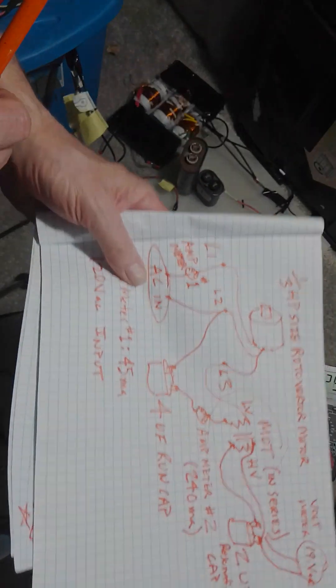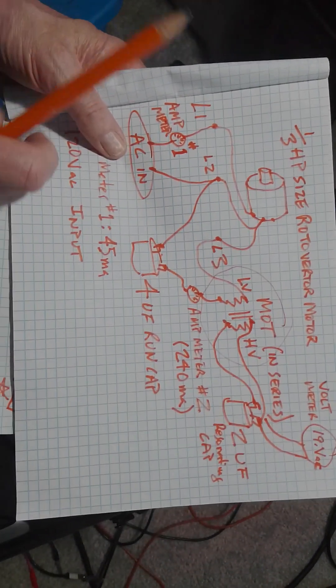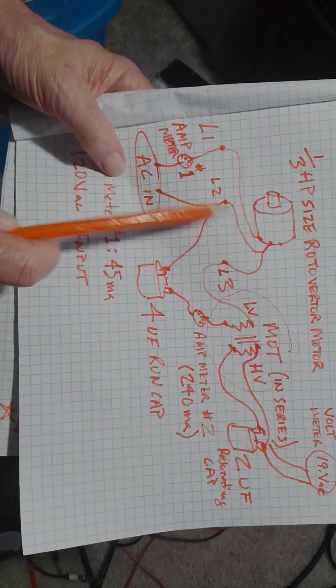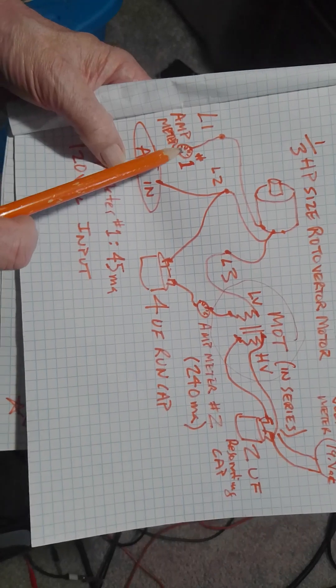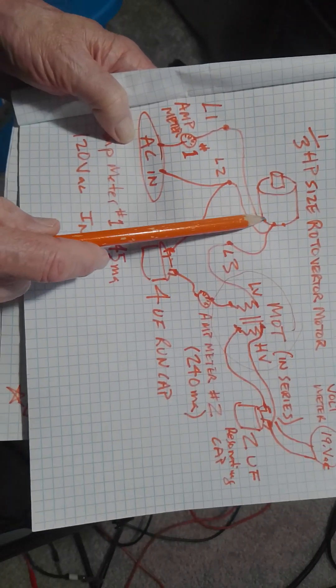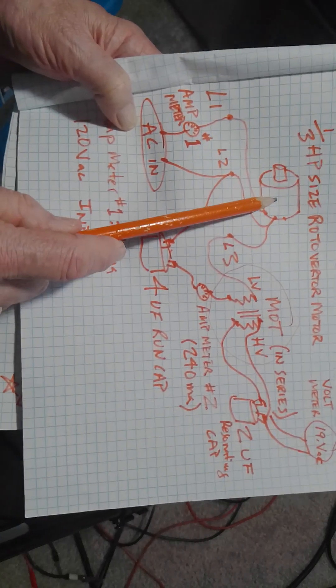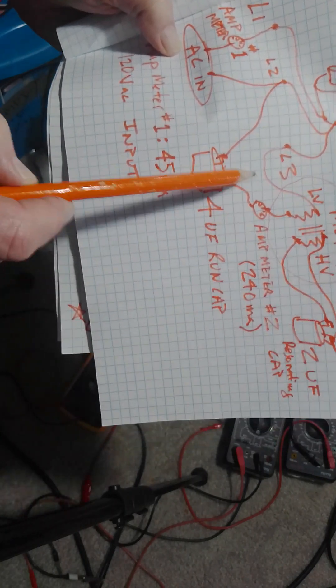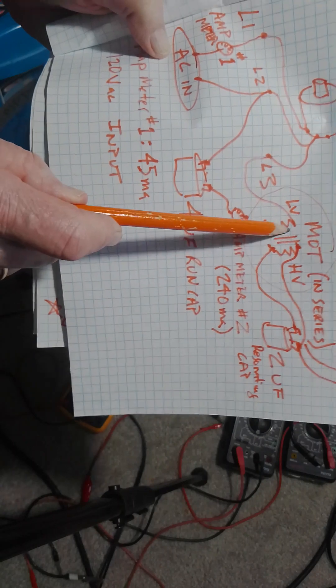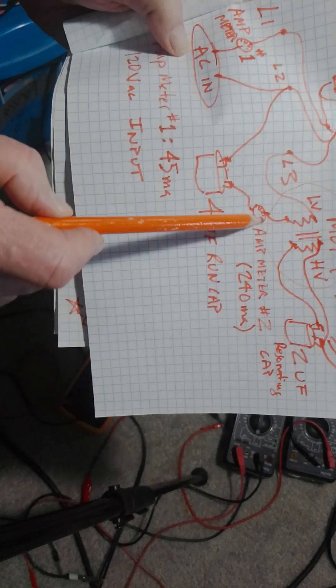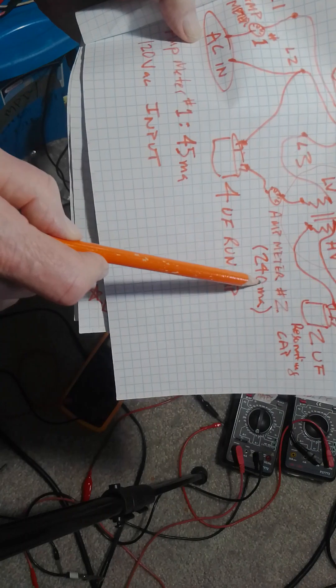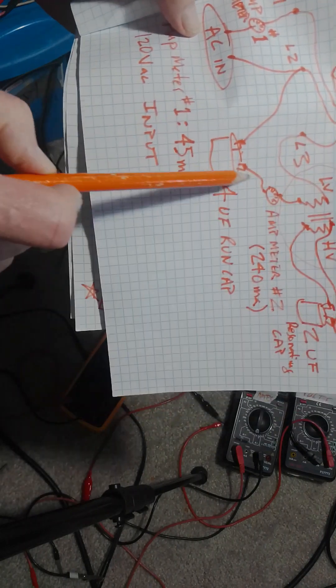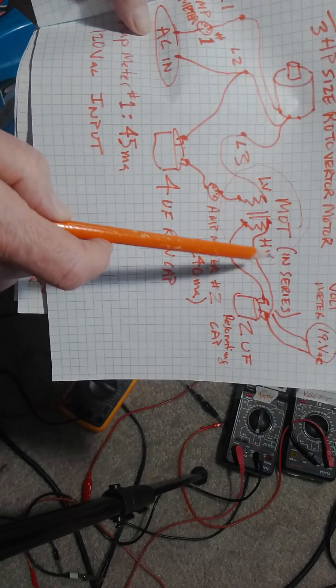And I'll show you the circuit again. Here's what I'm measuring input - the 45 milliamps to the motor. L1 and L2 goes to the rotoverter motor. L3 is the one that has the series transformer on it. And like I said, if you have an ammeter going to the transformer, either on this line or this line, either one, it says 240 milliamps circulating through that low voltage side of the transformer.